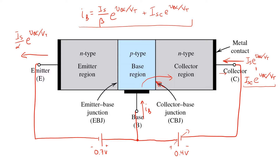At the same time, the base current is increasing due to this second term. The factor beta, which we think of as the ratio of collector current to base current in active mode, is now changed in saturation mode. Because collector current drops and base current increases, the apparent beta — let's call it beta forced — will be less. Beta forced is the ratio of collector current in saturation over base current in saturation, and it's certainly less than the value of beta in active mode.